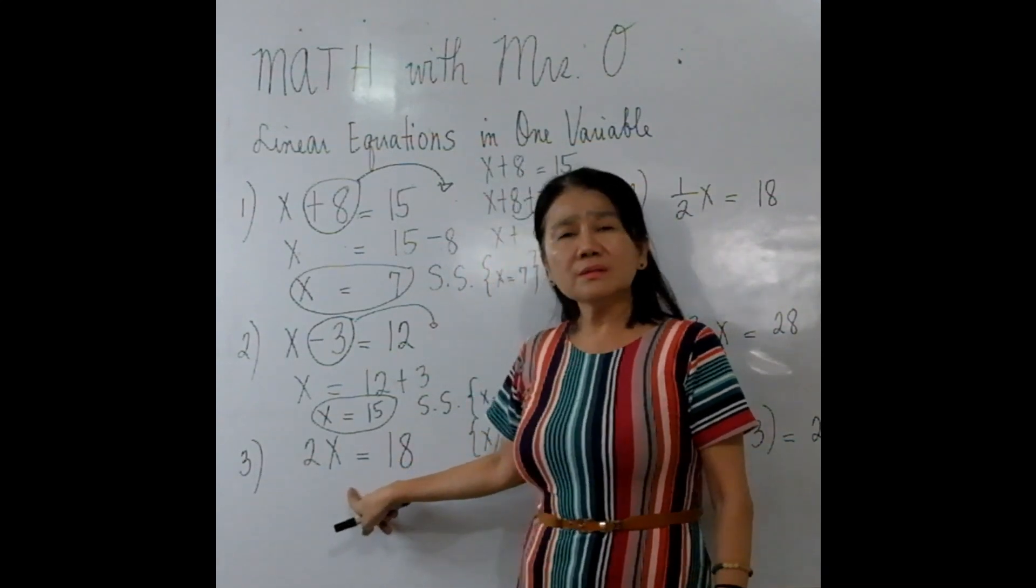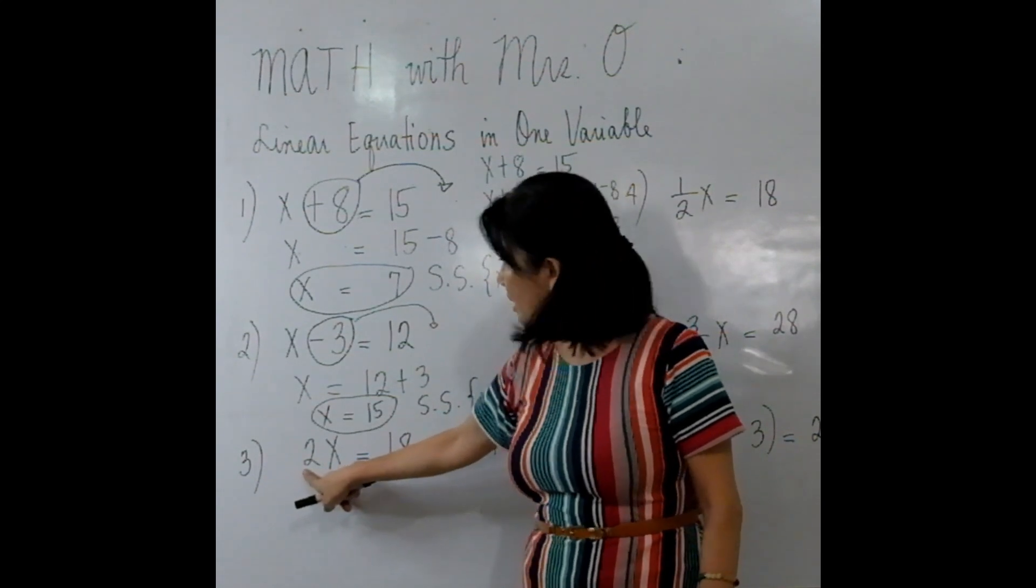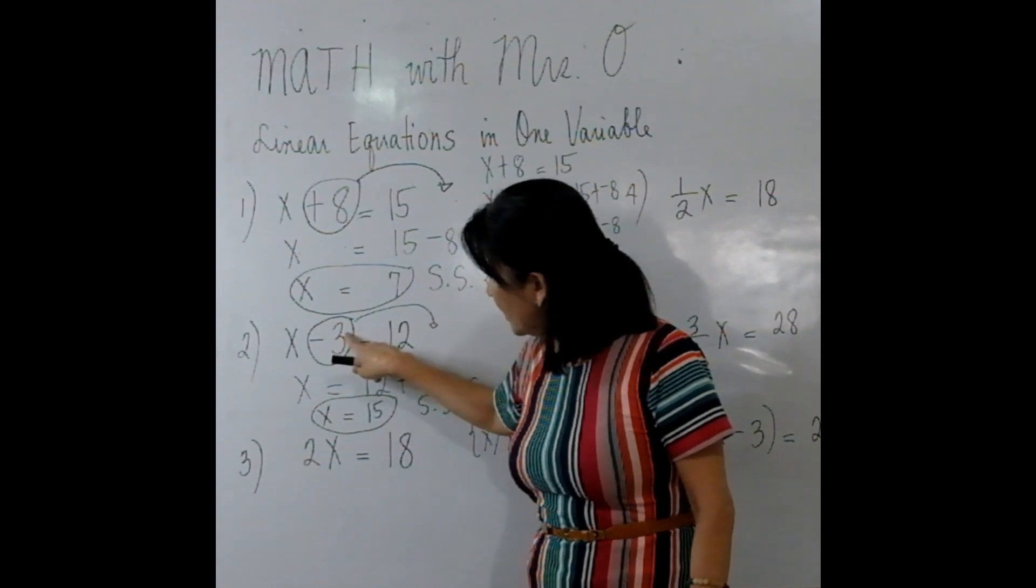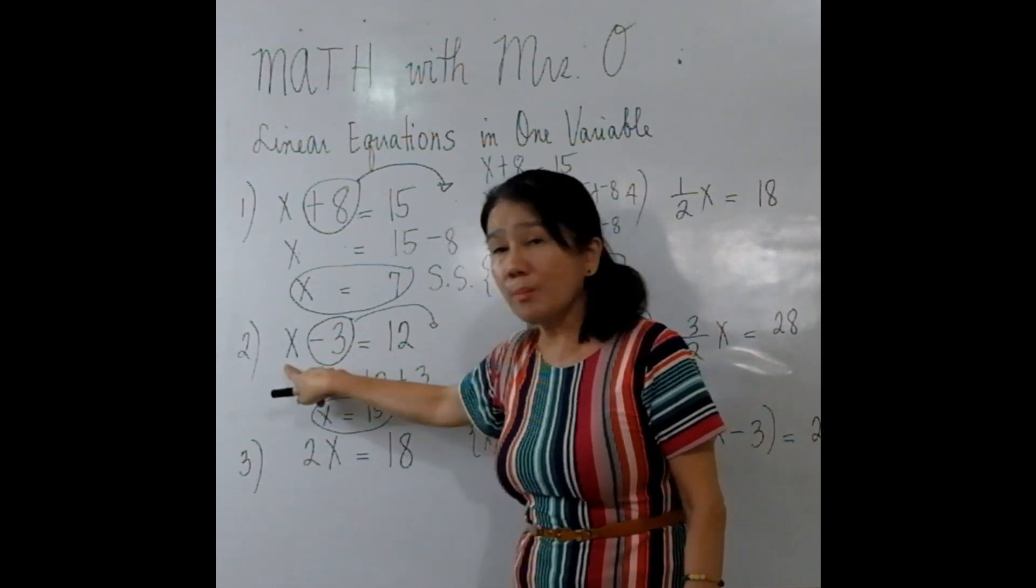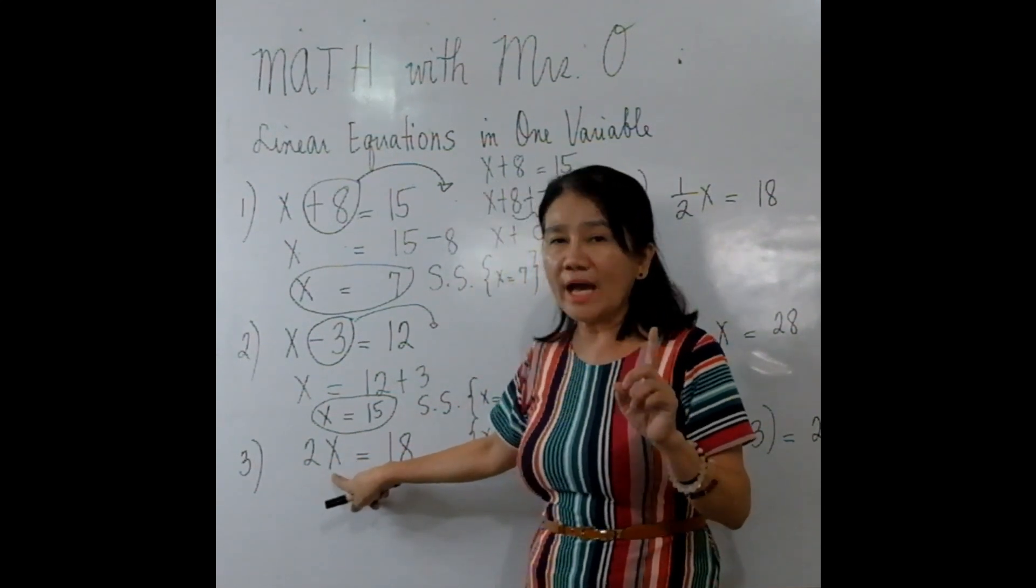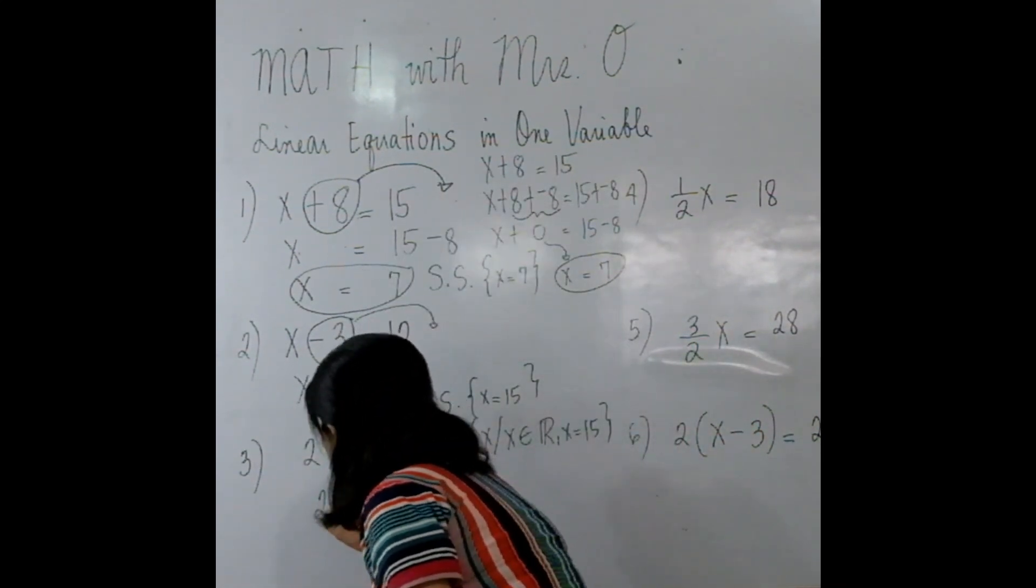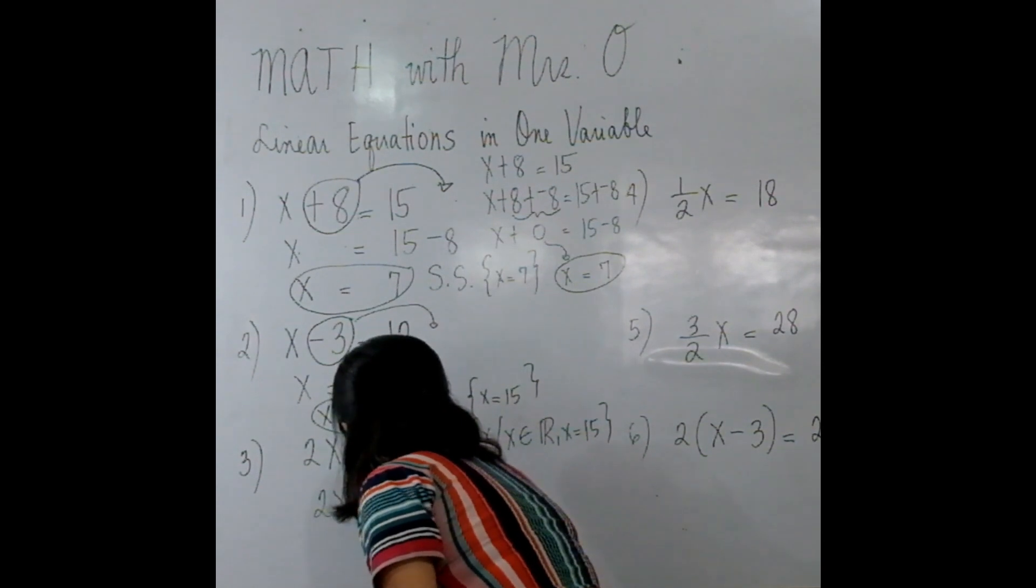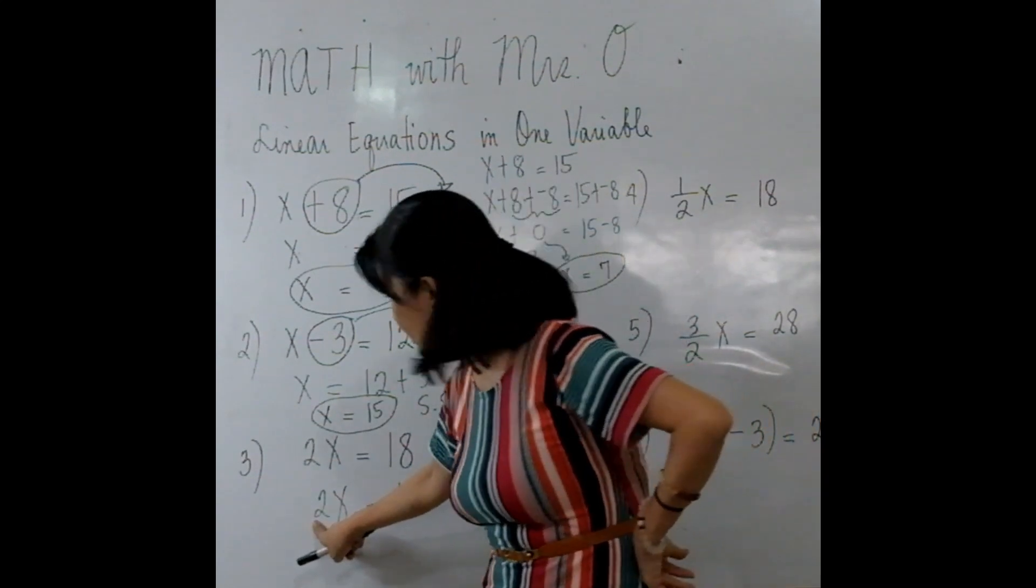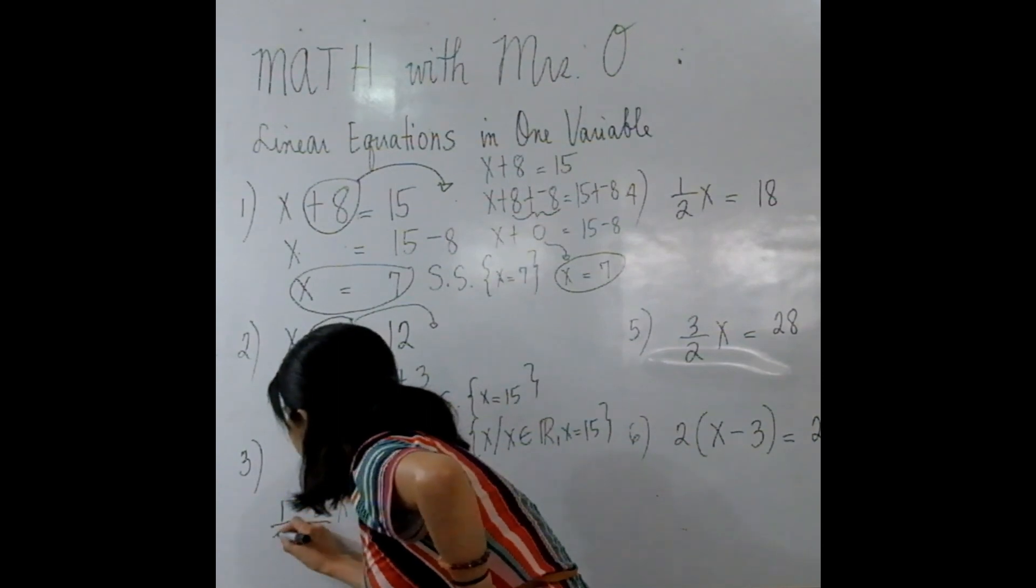What about in the third example where X is being multiplied by 2? Take note, in number 2, 3 is subtracted from X, but this time 2 is multiplied to X. In this case, you have to isolate X. How do we isolate X here? We have to multiply the reciprocal of 2. What is the reciprocal of 2? Remember, 2 is 2 over 1, and the reciprocal of 2 over 1 is 1 half.